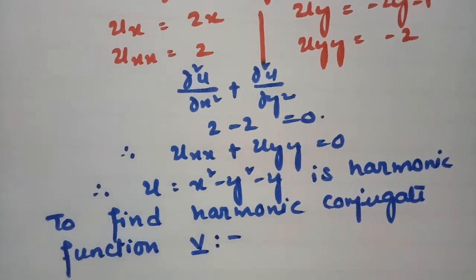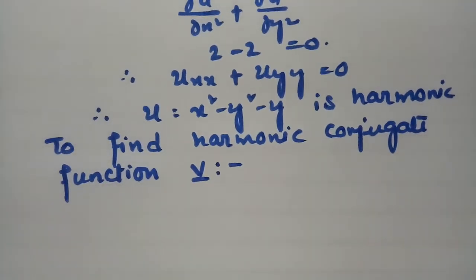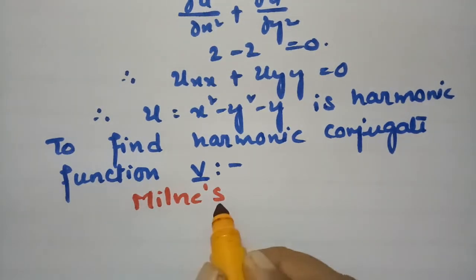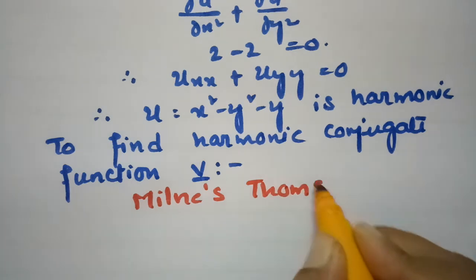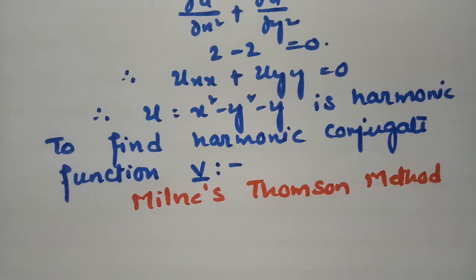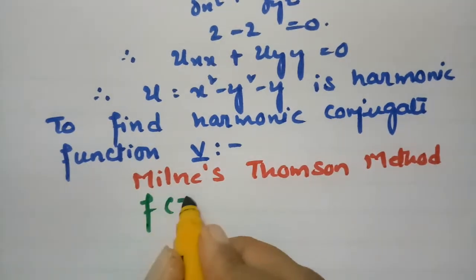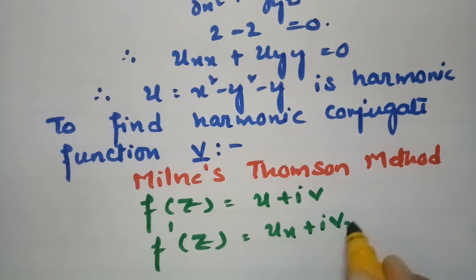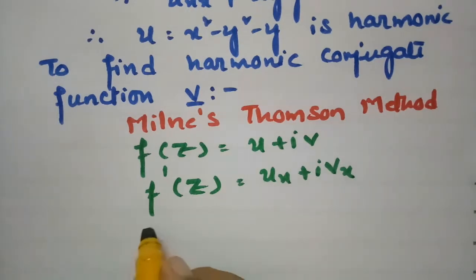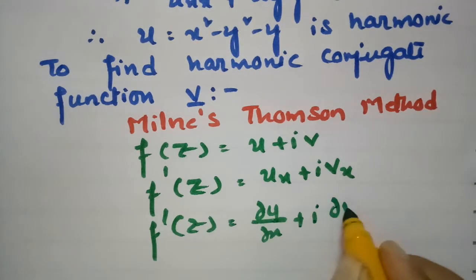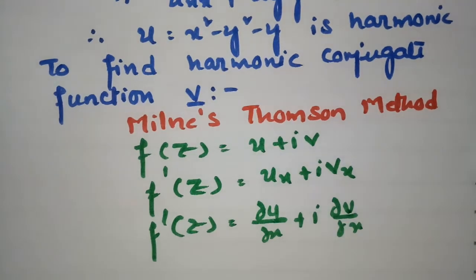According to the Milne-Thomson method, we have f(z) = u + iv. If I make a derivative with respect to x throughout, this gives f'(z) = ∂u/∂x + i·∂v/∂x.